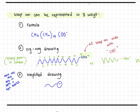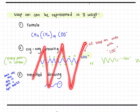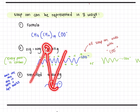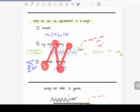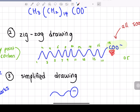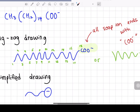The second way to represent soap ion is the exact zigzag drawing — like mountains, up and down. Each edge represents one carbon. Counting the carbons here: 1, 2, 3, 4, 5, 6, 7, 8 ... 15, 16, 17, 18, and the last carbon — since we have 18 carbons, this is stearate. Paired with a sodium ion, it would be sodium stearate.